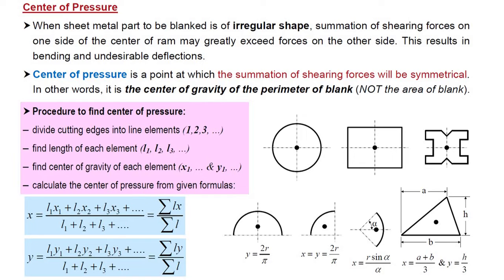So what is Centre of Pressure? When a sheet metal part to be blanked is of irregular shape, the summation of shearing forces on one side of the centre of the ram may greatly exceed forces on the other side. This results in bending and undesirable deflections. So we need to maintain the Centre of Pressure according to the geometry being cut or sheared. Centre of Pressure is basically a point at which the summation of shearing forces will be symmetrical. In other words, it is the centre of gravity of the perimeter of the blank, not the area of the blank.